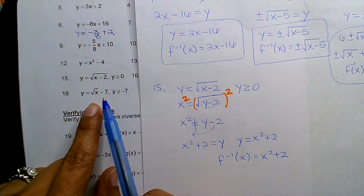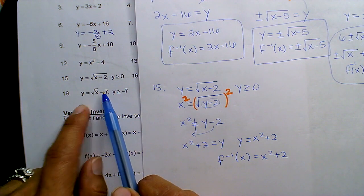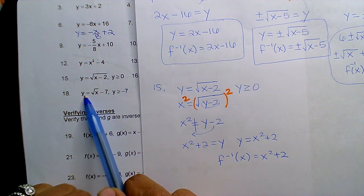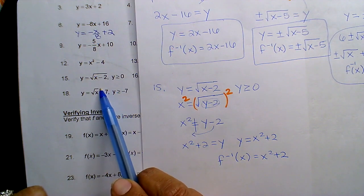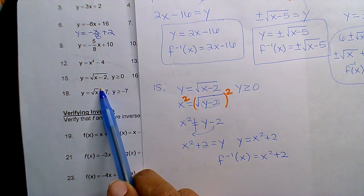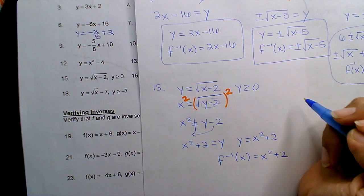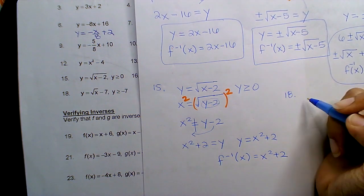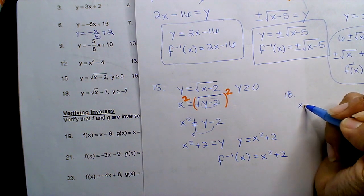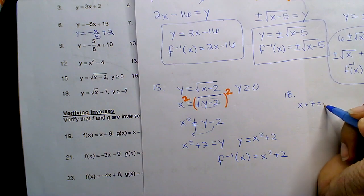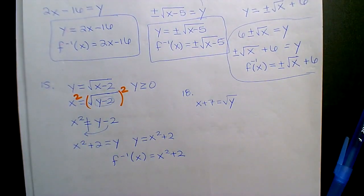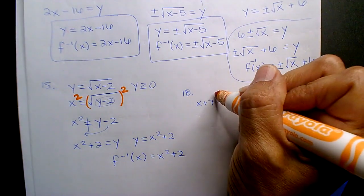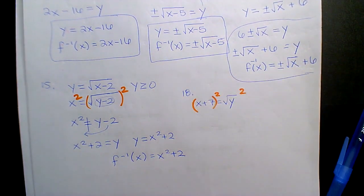For number 18, because of the negative 7, you would first move the negative 7 using inverse operations to where you have X plus 7, and then you would square root. However, what am I doing? X plus 7 equals Y for 18. But now when you square...